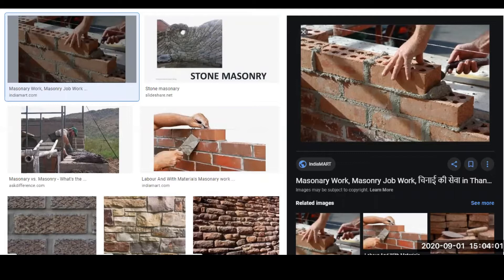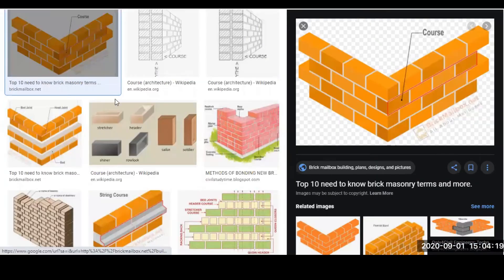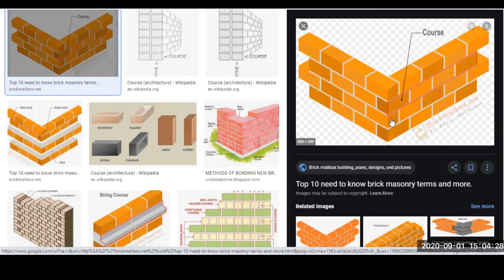Before knowing the particular types of classification of masonry, you should know some terms that are used in masonry. The first term is 'course.' A course is a horizontal layer of bricks or stones. Let me show you how it looks.